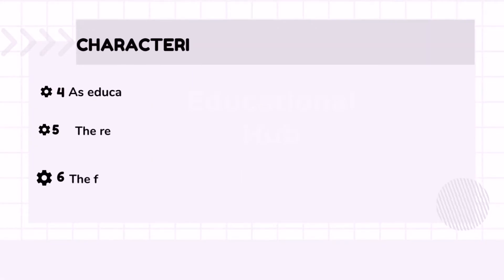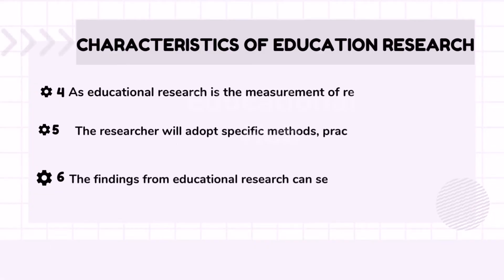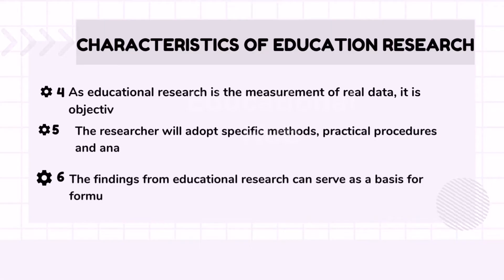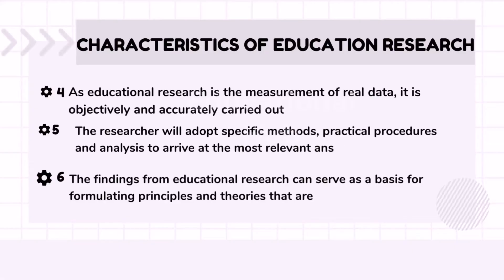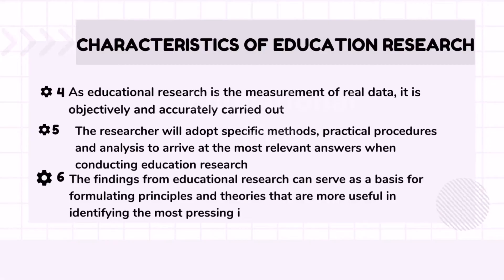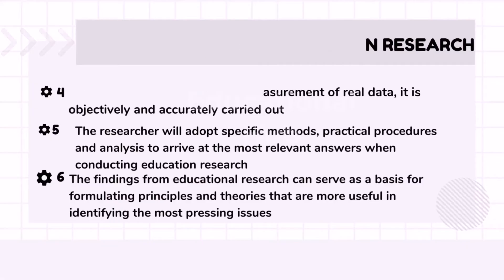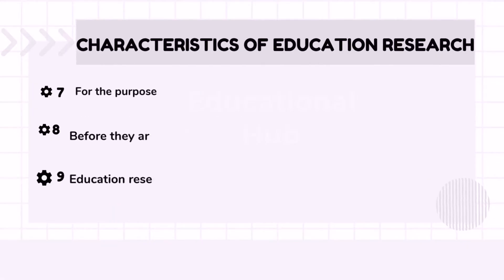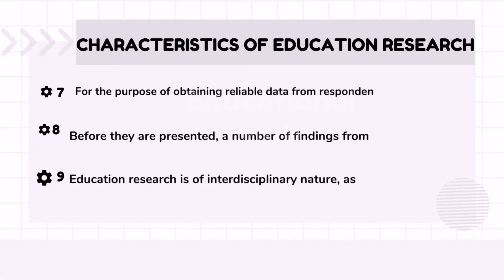Fourth, as educational research is the measurement of real data, it is objectively and accurately carried out. Fifth, the researcher will adopt specific methods, practical procedures and analysis to arrive at the most relevant answers when conducting education research. Sixth, the findings from educational research can serve as a basis for formulating principles and theories that are more useful in identifying the most pressing issues. Seventh, for the purpose of obtaining reliable data from respondents, this research approach is combined with structured, partial and unstructured questions.